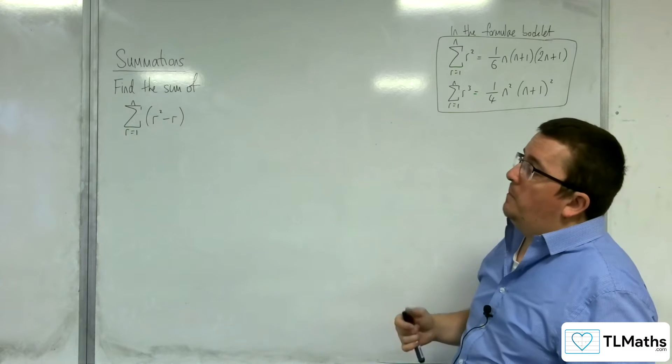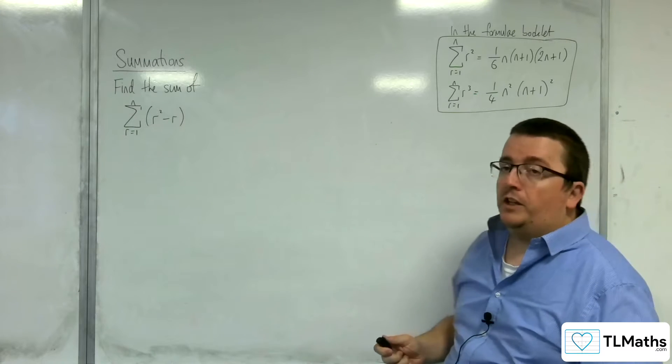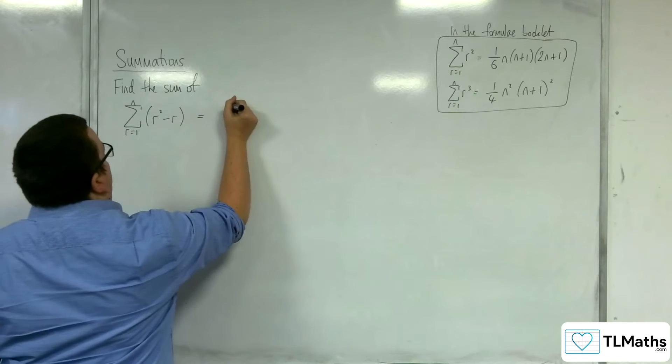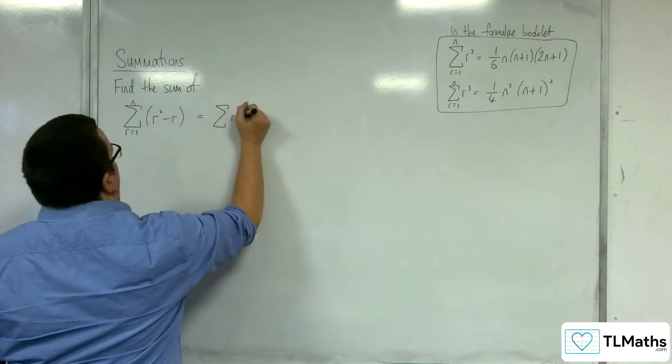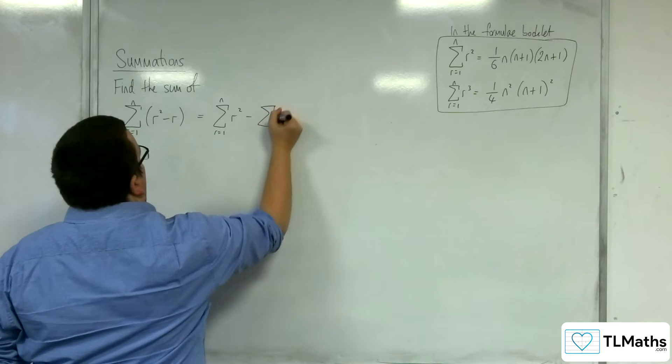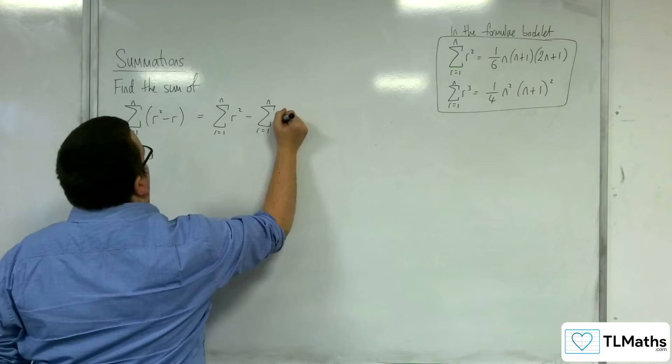In this example, we're going to look at the sum from r is 1 to n of r squared, take away r. We're going to break this apart into two summations: the sum from r is 1 to n of r squared, take away the sum from r is 1 to n of r.